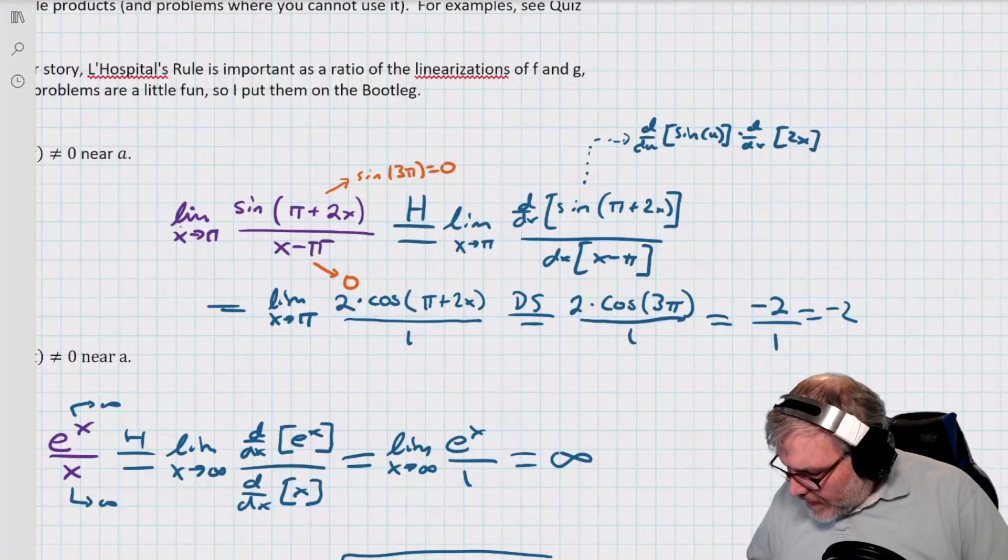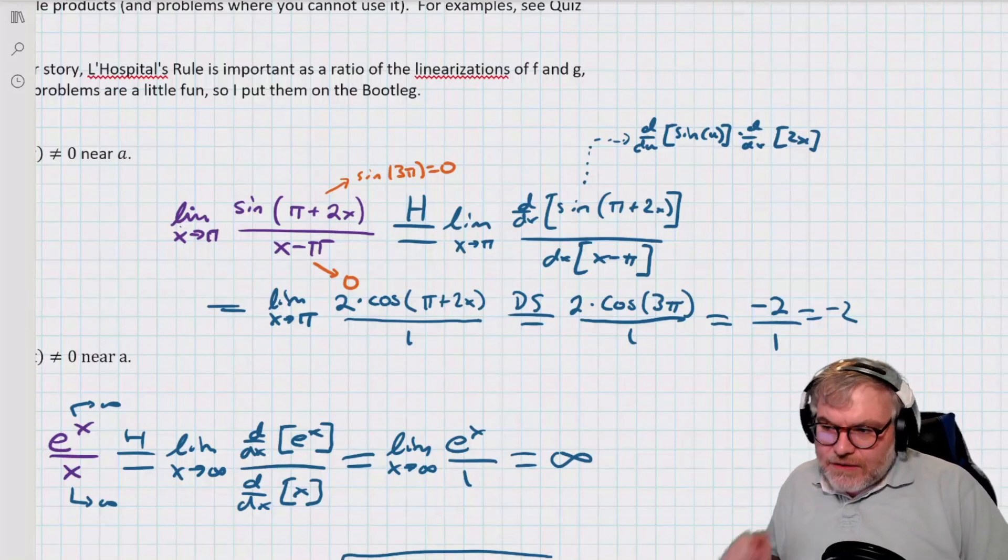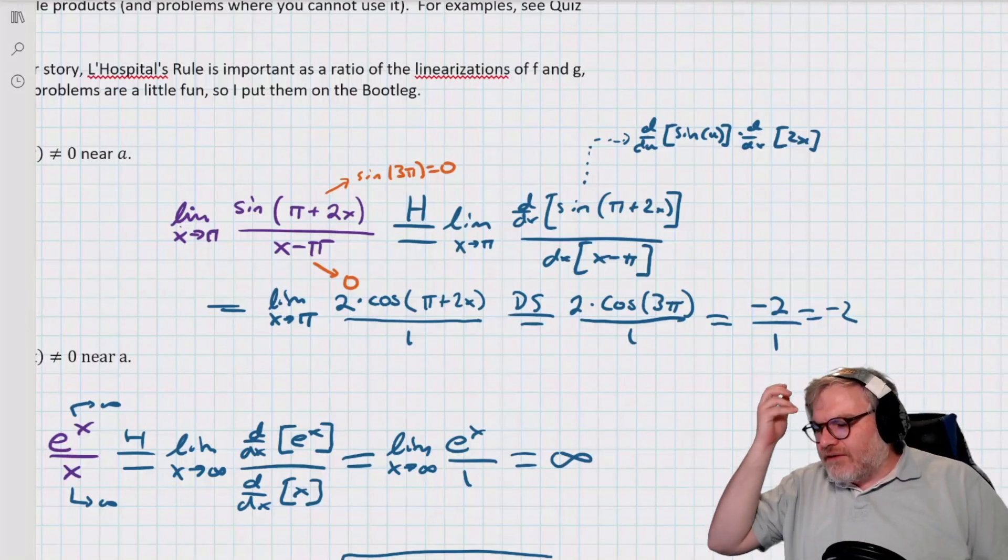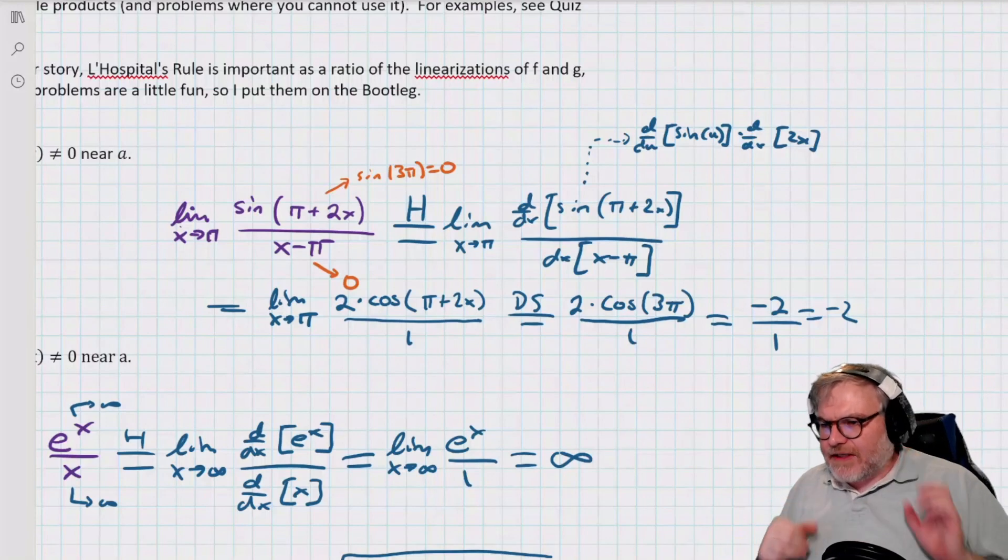So I take the derivative of the top and the derivative of the bottom separately. I don't do the quotient rule. I do the derivative of the top and the derivative of the bottom separately. And I wind up with something that I can direct substitute on. I get negative 2.